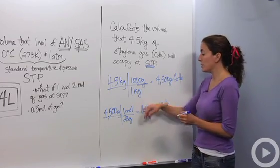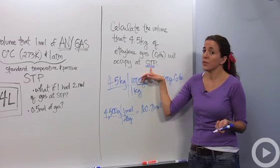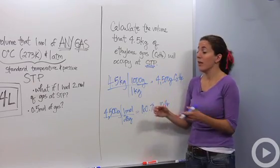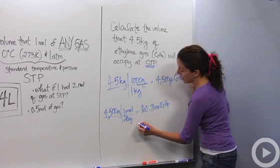That's how many moles I have. And my conditions are STP. So what's my volume? Well, I'm going to use my 22.4 liters because I know that it doesn't matter what gas it is, any gas at STP is going to be 22.4 liters.